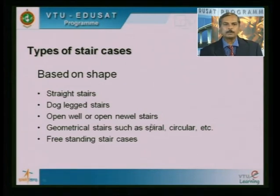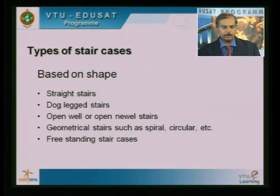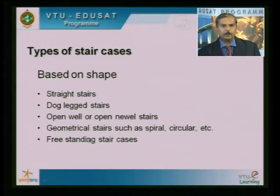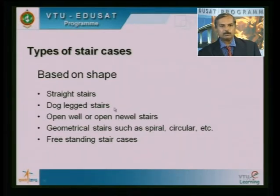Let us see the different types of staircases — classification based on shape. We have the stride stair, which is what one flight of the dog-legged staircase is. Then we have the dog-legged staircase, open well staircase (also called open new well stair), geometric staircases such as spiral or circular staircases, and free-standing staircases. From the examination point of view, the design of stride staircase and the two flights of the dog-legged staircase are most important. The design of open well staircase is similar to dog-legged staircase, with a small difference in the calculation of load.